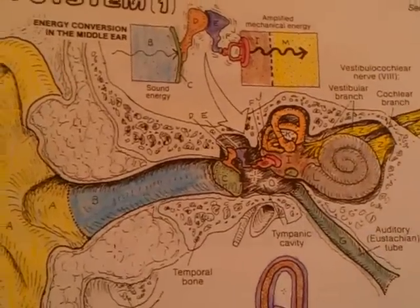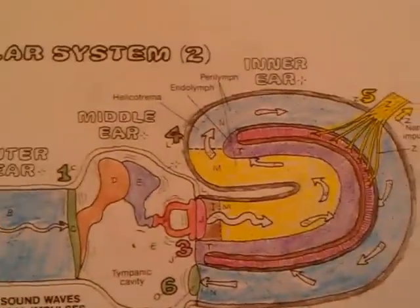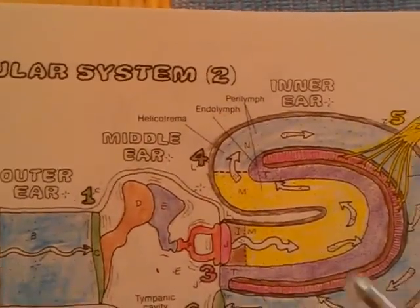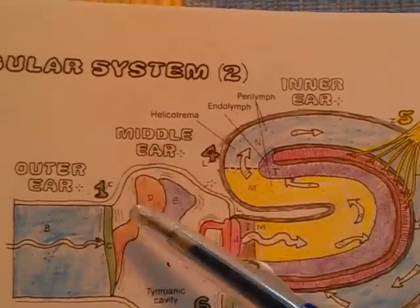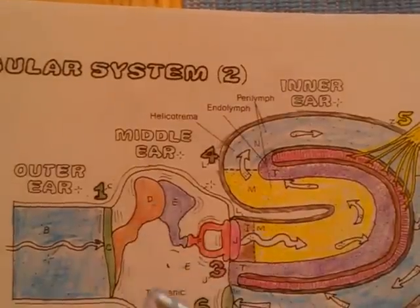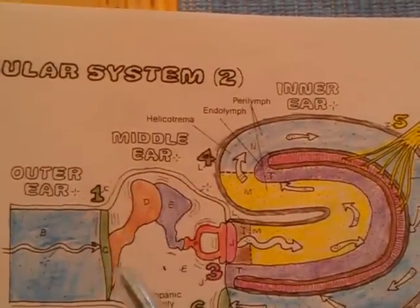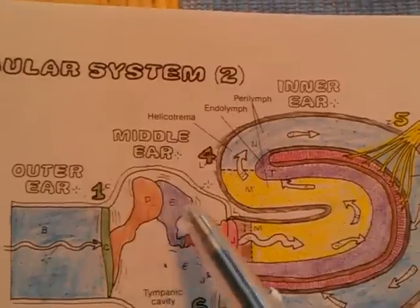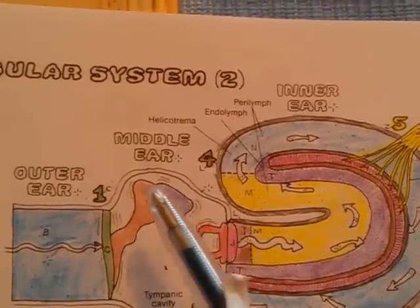The auditory ossicles transmit the vibrations from the tympanic membrane to the inner ear. You have the malleus, also called the hammer, which is attached to the tympanic membrane. Then you have the incus, also called anvil, which are in between.